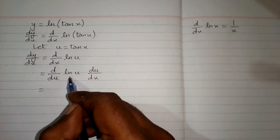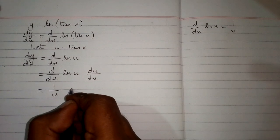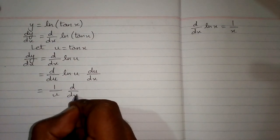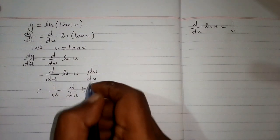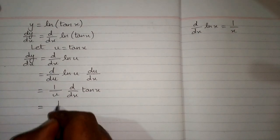The derivative of ln of u is 1 upon u, the derivative of u which is tangent of x. Now we can put the value of u over here.